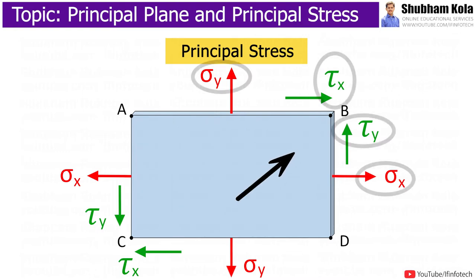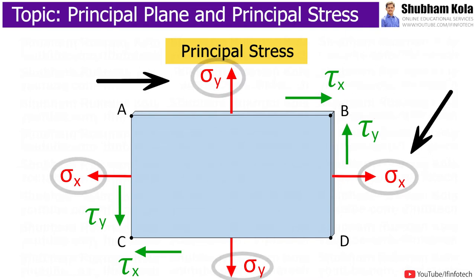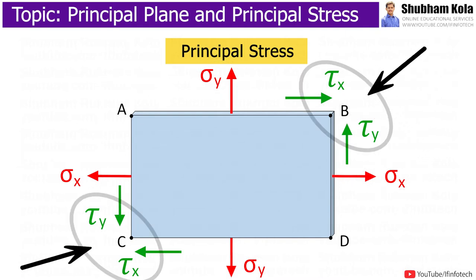The stresses developed in component are sigma x, sigma y, and tau xy. Here, sigma x and sigma y are normal stresses and tau xy are shear stresses. The body is going to fail with combination of these stresses.